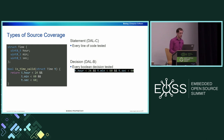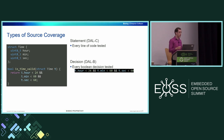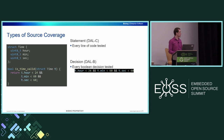Next up, decision coverage. Decision coverage requires that you look at every Boolean decision and verify that each decision evaluates to both true and false. So you're starting to test more of the edge cases in your code. In this example, there is a single decision — checking for the validity of the input. To get 100% decision coverage, we would need to test this with both a valid and invalid time struct, causing the Boolean expression to evaluate to both true and false.